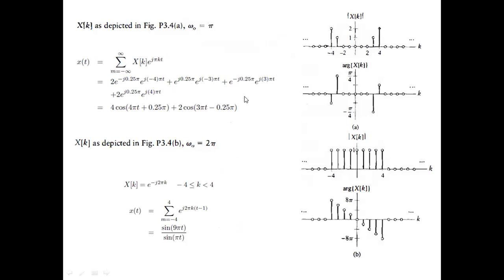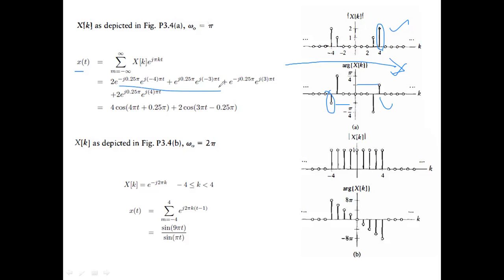In another type of problem, you are given x(k) as magnitude and phase and asked to find x(t). For example, a coefficient of magnitude 2 at phase π/4 means 2·e^{j·π/4}, and its conjugate 2·e^{-j·π/4} at the negative frequency. The standard approach is to work from the extreme left to the right, from -∞ to +∞.